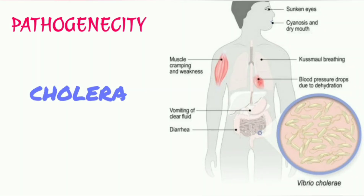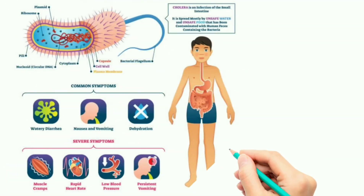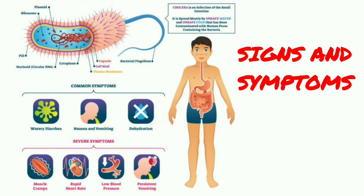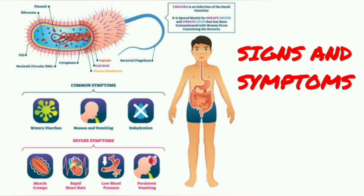Now let's see the pathogenicity of cholera. Signs and symptoms include sunken eyes, cyanosis, dry mouth, muscle cramping, vomiting of clear fluid, and blood pressure drops due to dehydration. It also shows diarrhea and vomiting. These are the signs and symptoms of Vibrio cholerae.